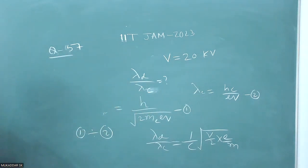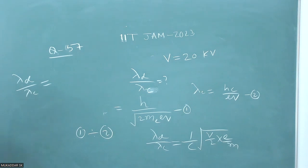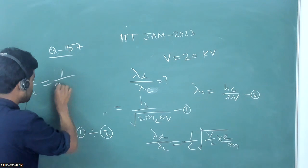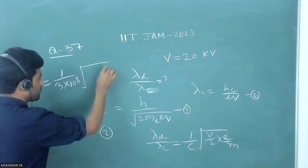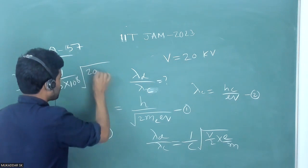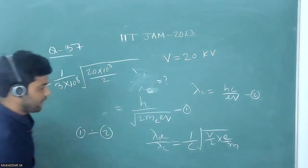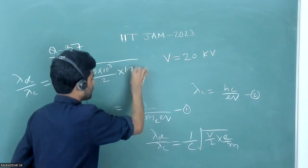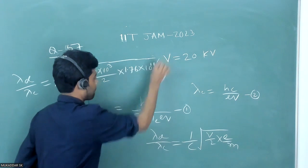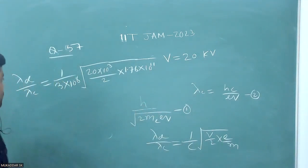Now substituting the values: c = 3×10⁸ m/s, V = 20 kilovolts = 20×10³ volts, and the ratio e/m_e = 1.76×10¹¹ C/kg (as given). Plugging everything in, we calculate λ_deBroglie / λ_min.